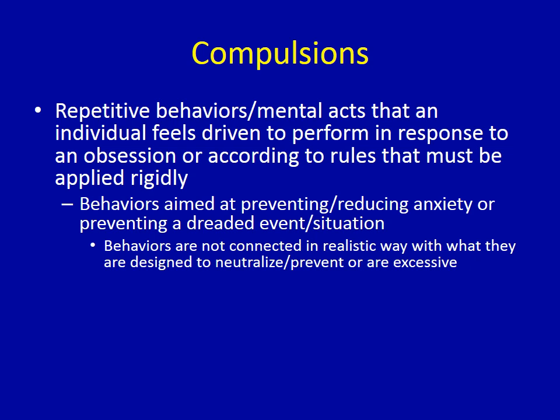For example, a person might feel they need to check the stove because if they don't, the house will burn down, or they need to put things on the table in size order because if they don't, they'll feel very anxious. Importantly, these compulsions are either not connected in a realistic way to the outcome they are designed to prevent, or they are excessive. For instance, somebody with a contamination obsession may have compulsive hand-washing, but the number of times and situations in which they wash their hands are excessive compared to the actual risk of being contaminated.